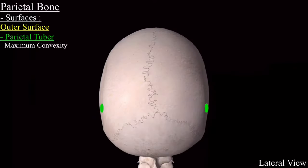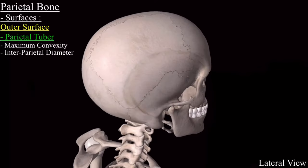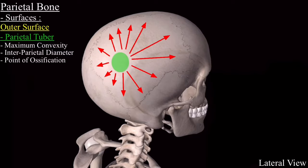The distance between the parietal tubers of the two parietal bones is the maximum transverse diameter, called the interparietal diameter. In children, the parietal tuber is the point from where ossification began and then spread in all directions.